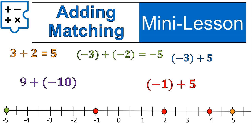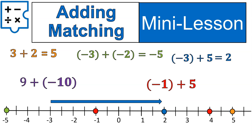Next, let's look at negative 3 plus 5. We're starting with a negative here — negative 3 — but we are adding 5. That means we're moving to the right 5 spaces, which brings us up to positive 2. That's how adding works.